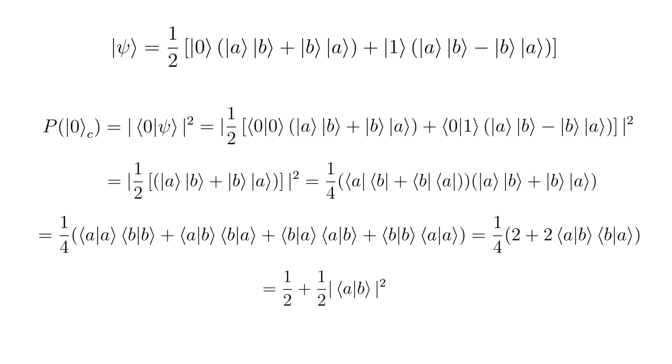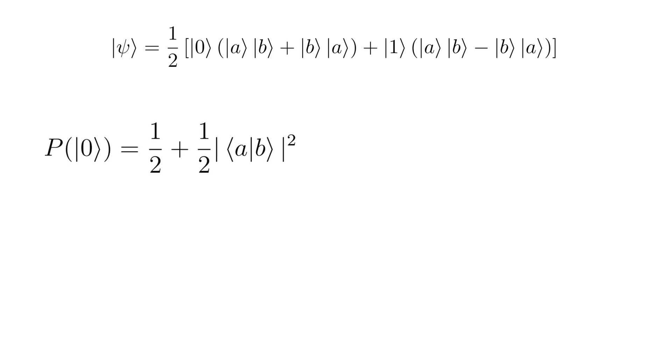This probability depends on the squared inner product of vectors a and b. It means that the overlap between a and b can be evaluated from the measurement result. It can be shown in a similar way that the probability to measure the ancillary qubit in state 1 is almost the same expression but with a minus sign.